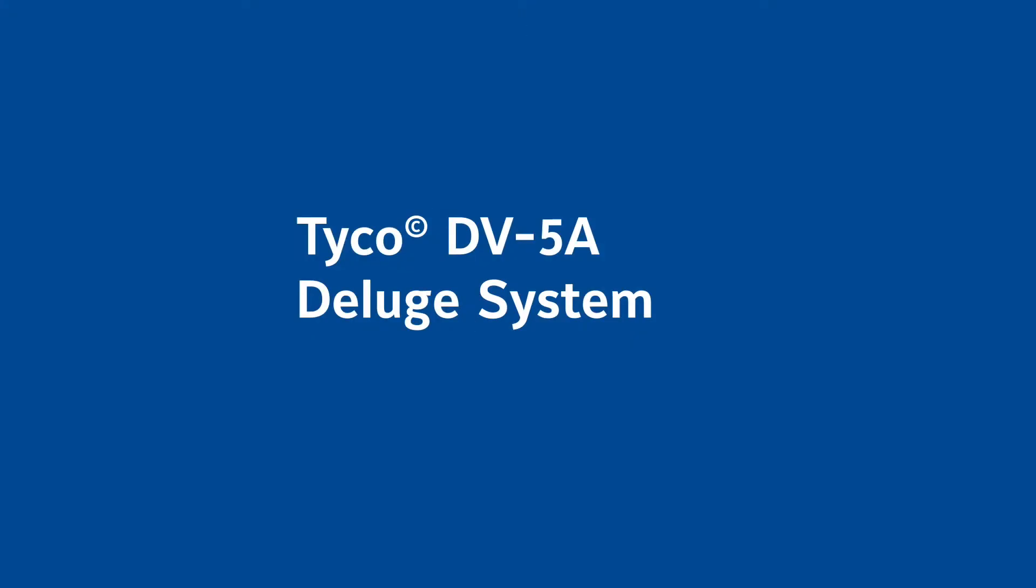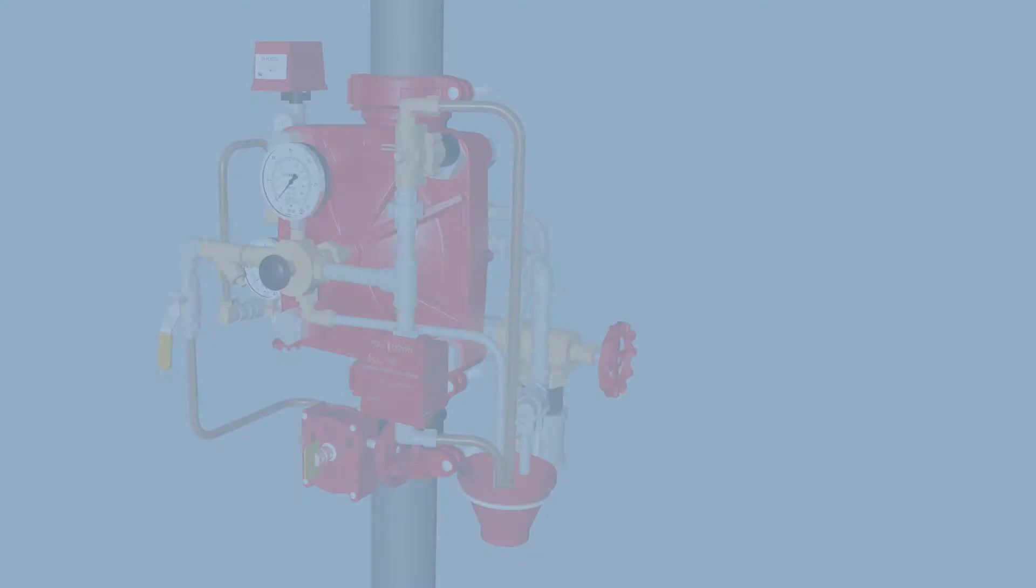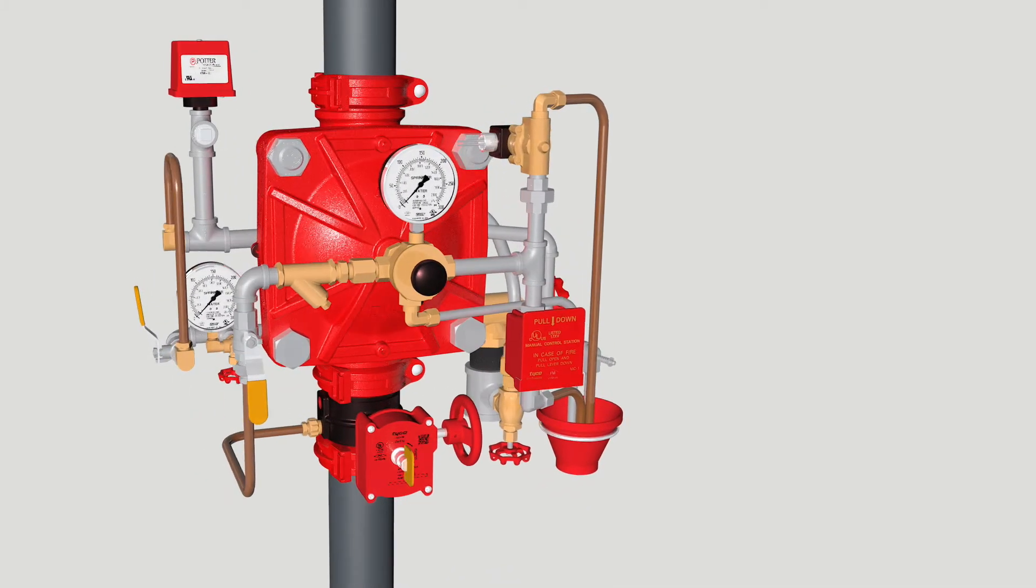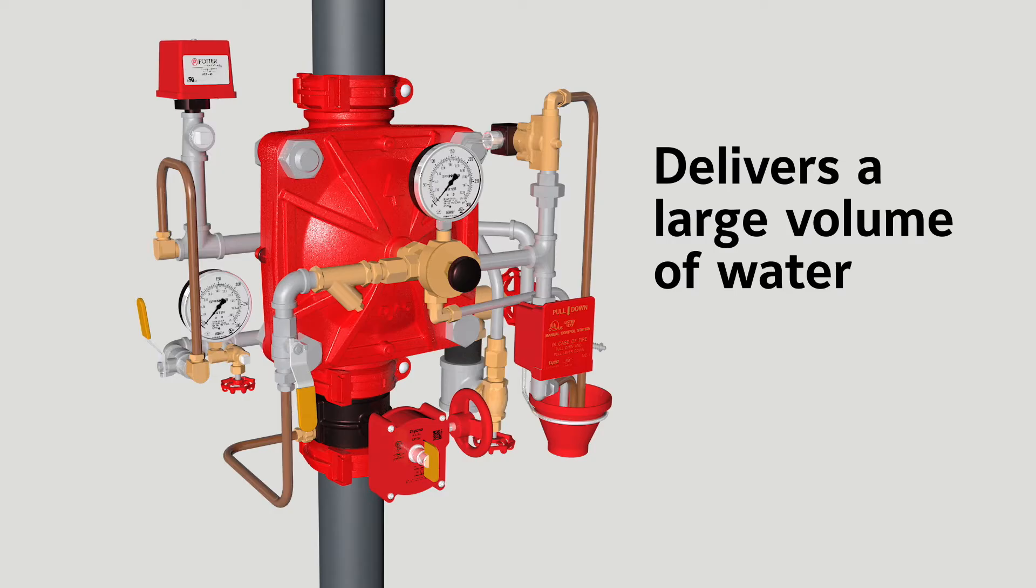The DV5A deluge system provides two principal types of fire protection. In locations involving highly combustible materials, the system delivers water over a broad area to rapidly suppress the fire.